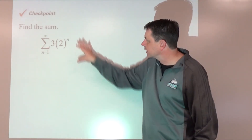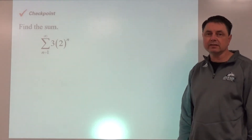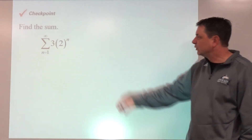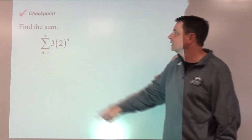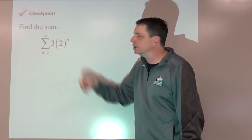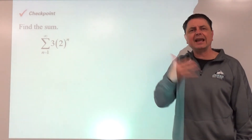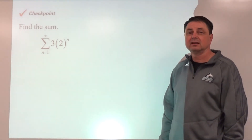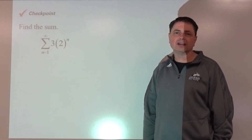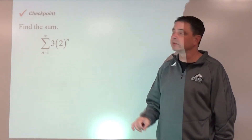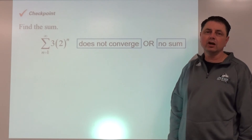Checkpoint: pause and work it out. Did you get negative 6? That doesn't make sense — substituting in gives terms of 6, 12, 24, increasing without bound. The series cannot have a sum of negative 6. The reason: the r value is 2, and the absolute value of 2 is not less than 1. The formula only works when r qualifies. This series does not converge; there is no sum.